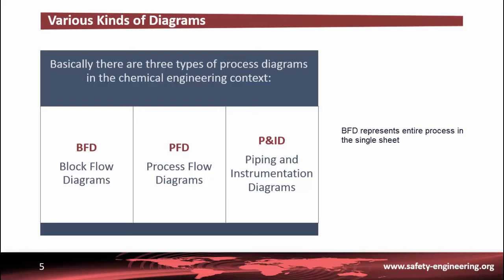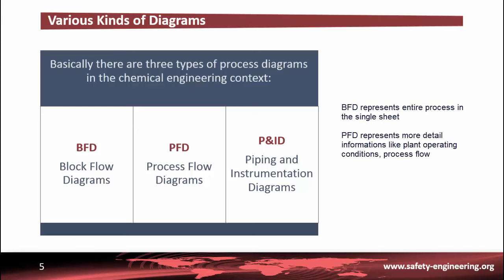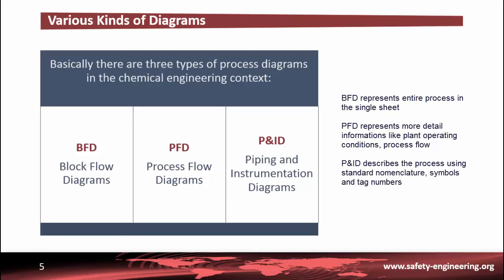In short, a BFD represents the entire process in a single sheet, whereas in the PFD you can find detailed information like plant operating conditions or process flow. It uses symbols to represent the equipment. P&IDs provide more detailed information compared to the previous two drawings. They use standard nomenclature, symbols and tag numbers to fully describe the process.